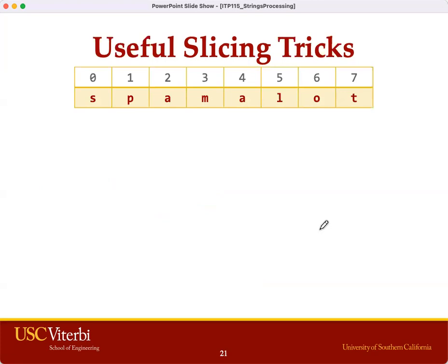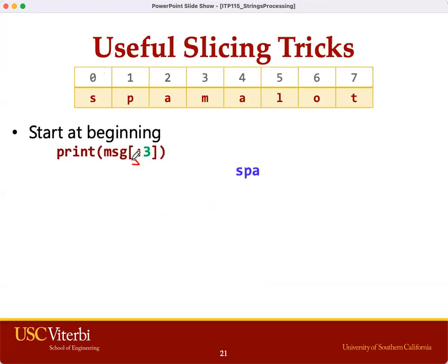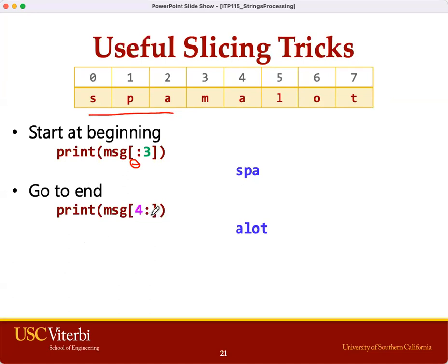A few other useful tricks for slicing. If we skip the start position, Python will use 0 as a default start position. So this slice is equivalent to saying msg[0:3] — we start from 0, go up to but not including 3, so our slice is 'SPA'. Another technique: if we skip the end position, Python will assume the end position has the value of length as a default. So starting from 4, getting up to but not including 8, we should get 'alot'.